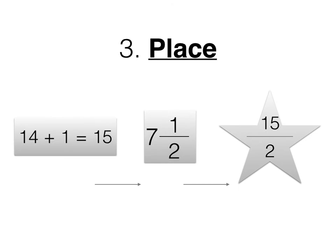Next, we need to place our total on our original denominator. Our total was 15. Our original denominator was 2. This gives us an improper fraction of 15 over 2.